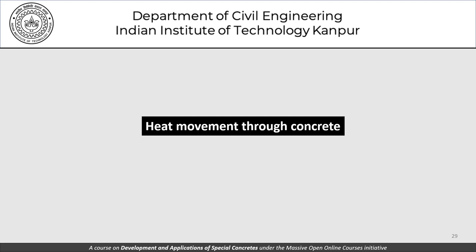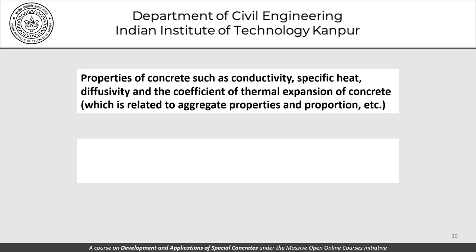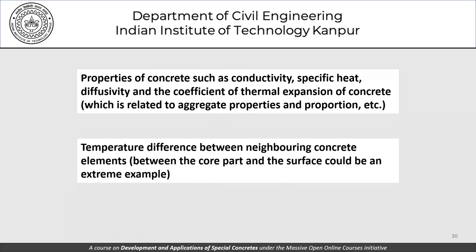Regarding heat movement through concrete: properties such as conductivity, specific heat, diffusivity, and the coefficient of thermal expansion — which is related to aggregate properties and proportions — come into play. Heat is conducted from the high-temperature core toward the surface, where it is radiated to the atmosphere. The temperature difference between neighboring concrete elements drives the rate of heat conduction through the concrete.